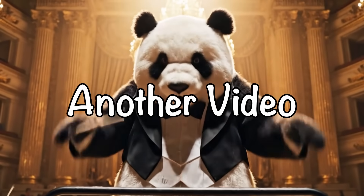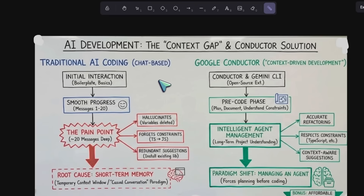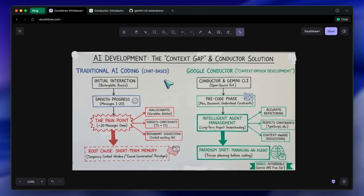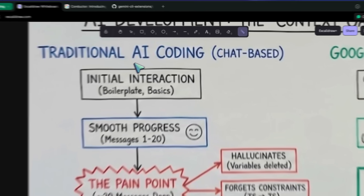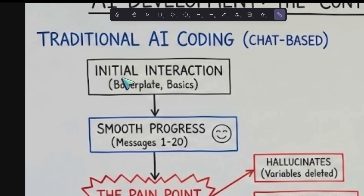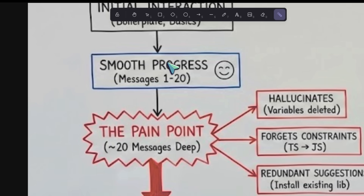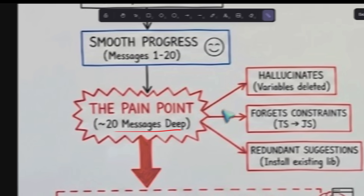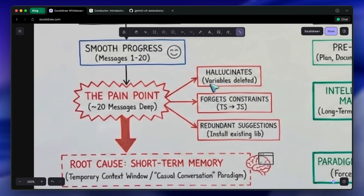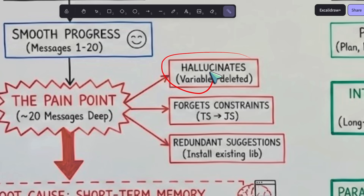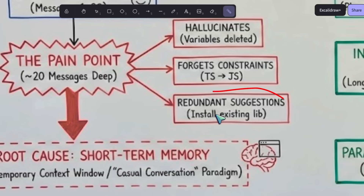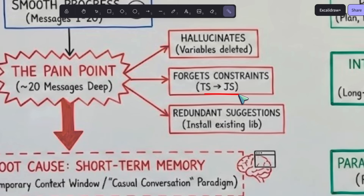Welcome to another video. We need to talk about a very specific pain point that every single developer using AI has run into. You know the drill — you open up your favorite AI coding tool or chat interface and start building something. At first it is great: it writes the boilerplate, sets up the basic functions, and everything is smooth. But then you get about 20 messages deep and the AI completely loses the plot — it hallucinates a variable you deleted 10 minutes ago, it forgets you are using TypeScript and starts writing JavaScript.